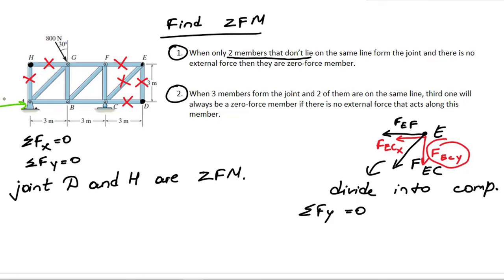If A is pin support and C is roller support, find one more zero force member and write your answer in comments part.